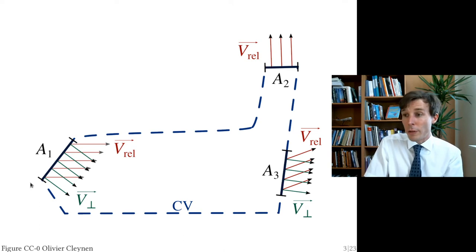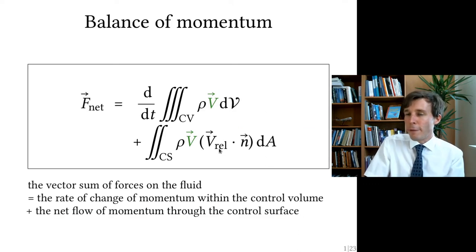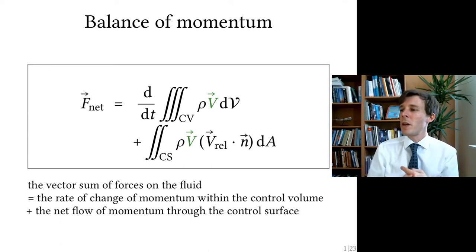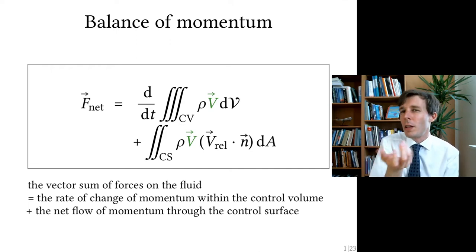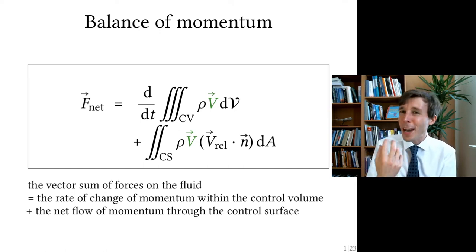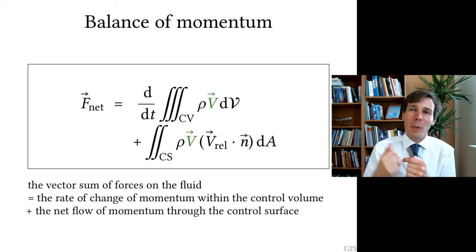In this equation, V_rel dot N — the dot product of the relative velocity vector and a unit vector pointing outwards — gives the length of V_orthogonal. By convention (which is very upsetting for thermodynamicists), V_orthogonal is negative inwards and positive outwards.